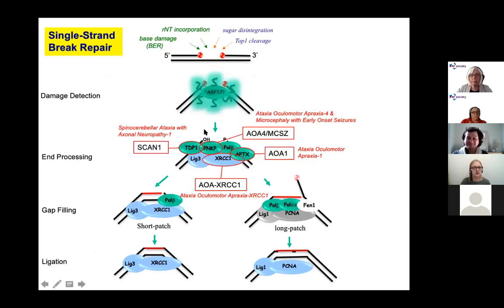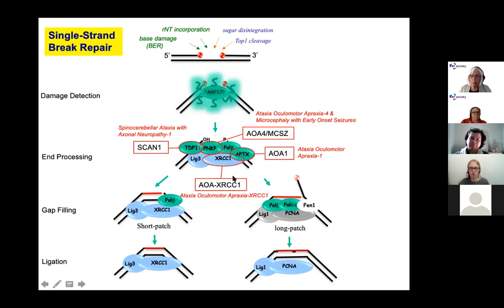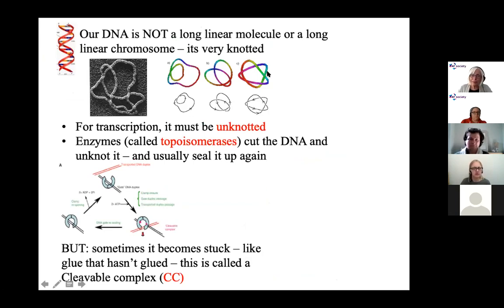There are two pathways that can deal with single strand break repair. Six key players are involved, and four of these six can cause progressive ataxia: Aprataxin (AOA1), SCAN1, and AOA XRCC1, which are all quite a lot more rare than A-T. Our DNA is not really completely linear — it gets itself into great big knots, as you can see in this electron micrograph.